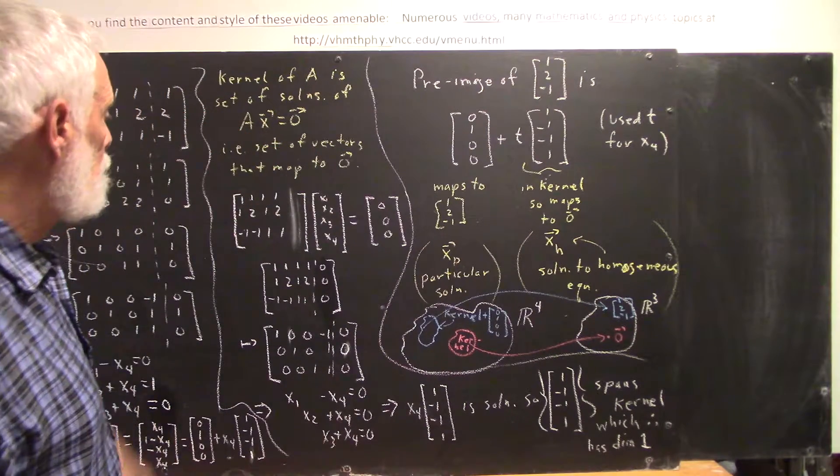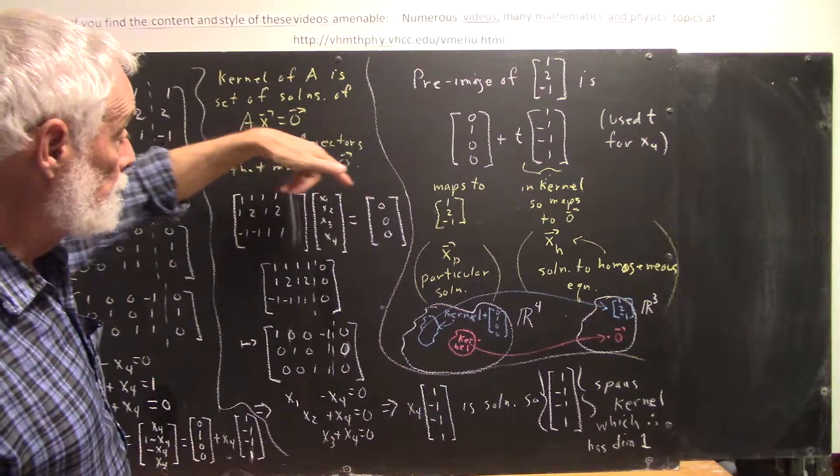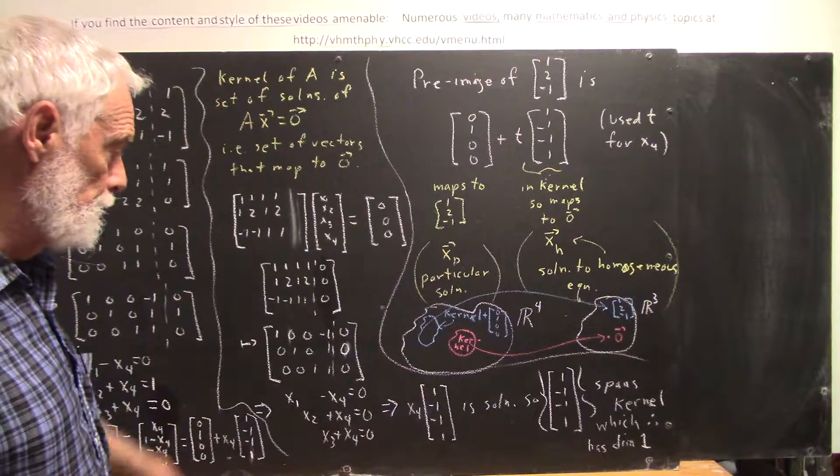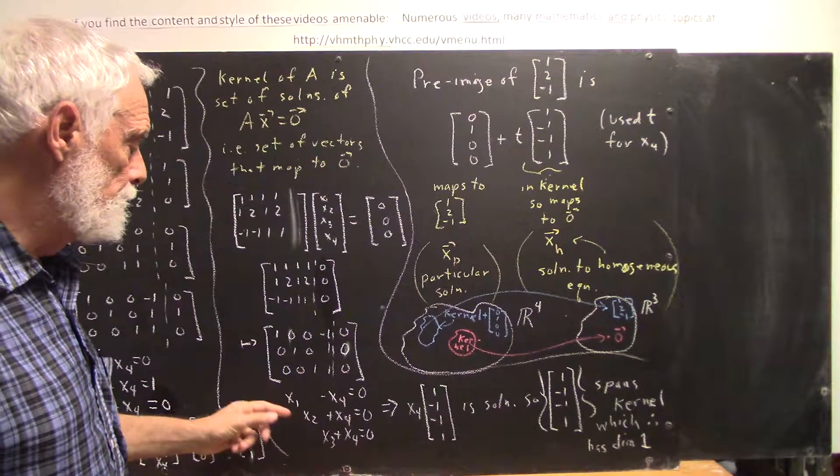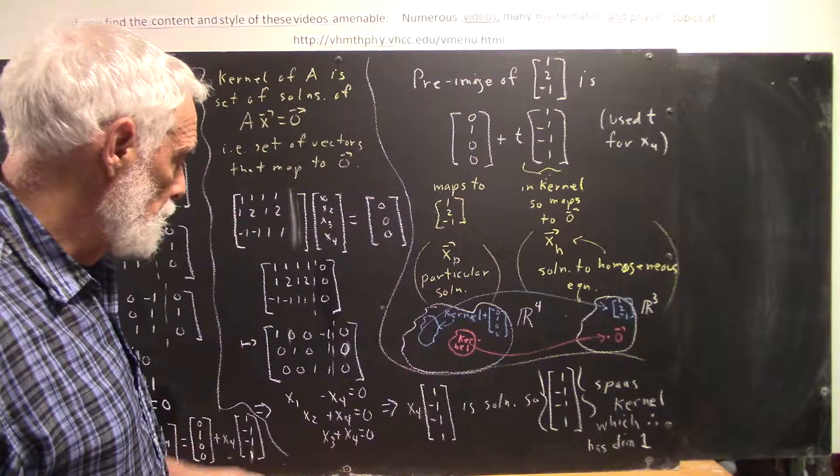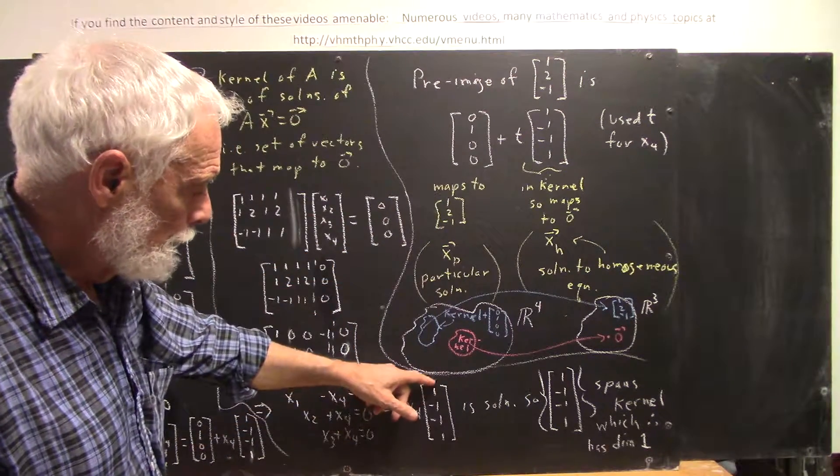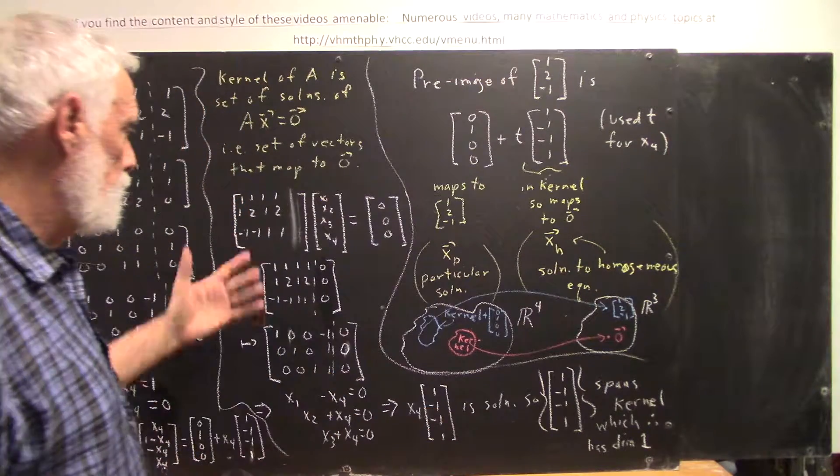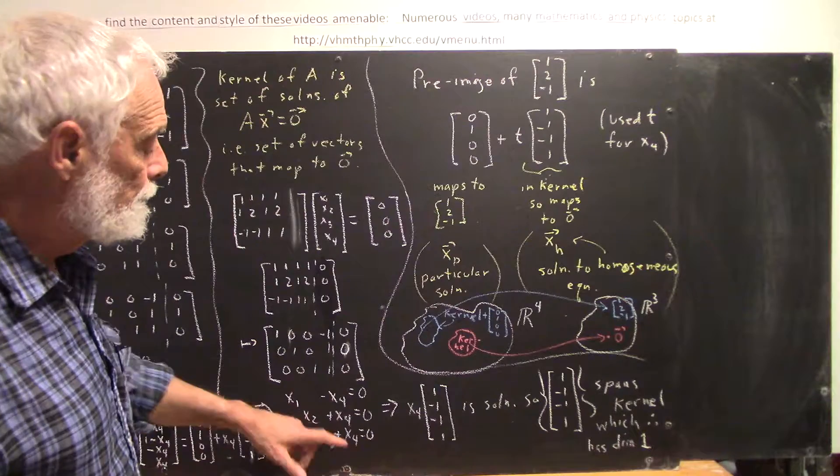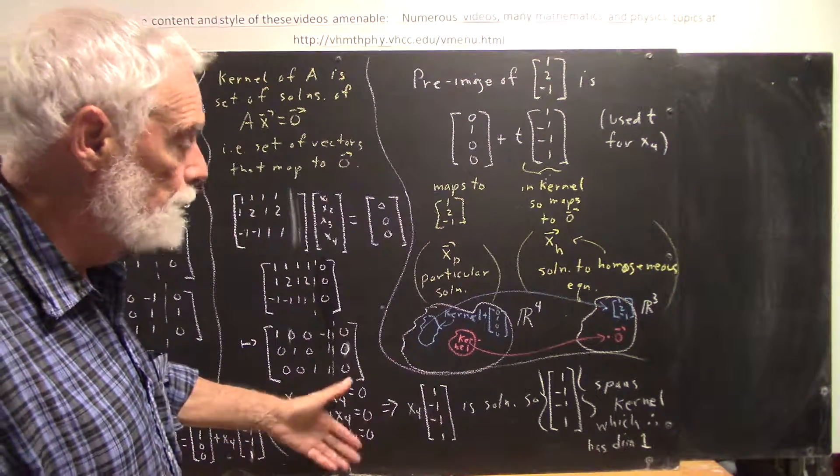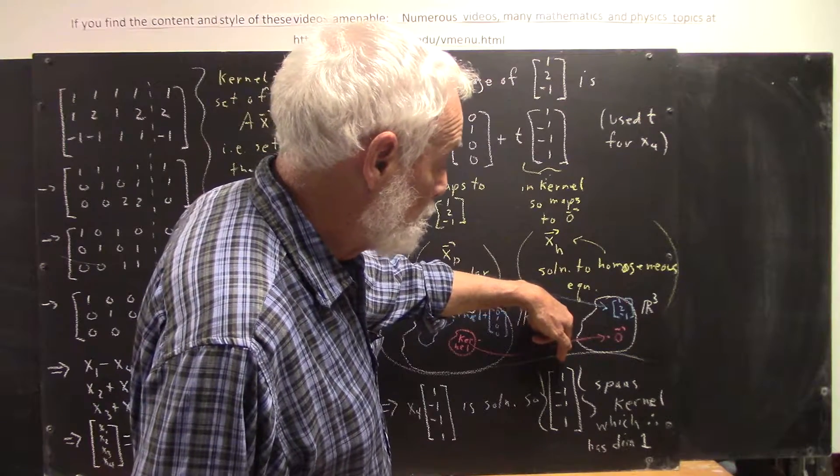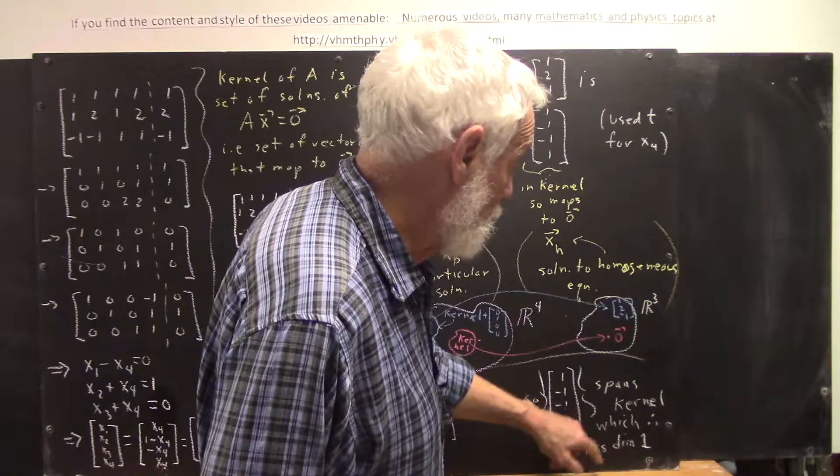If we write out the equation AX equals 0 for the same matrix that we've been using, right here it is, this reduces to this, and this leads to the equations X1 minus X4, X2 plus X4, X3 plus X4 equals 0, which leads to the conclusion that X4 times 1, negative 1, negative 1, 1 is a solution to the equation, and that is the general solution to the equation. There's only one free variable, X4, and we choose X4 as the free variable, so that the set consisting only of that one vector spans the kernel, which therefore has dimension 1.